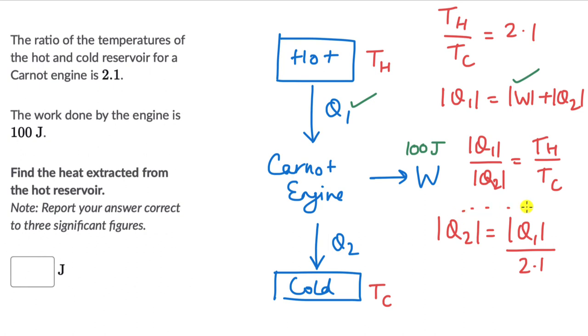And now we can place this over here and then we already know what work done is. We should be able to figure out the heat that is extracted. So this becomes Q1 equals 100 plus Q1 divided by 2.1. We take this to the left hand side and this becomes Q1 minus Q1 divided by 2.1 equals 100.